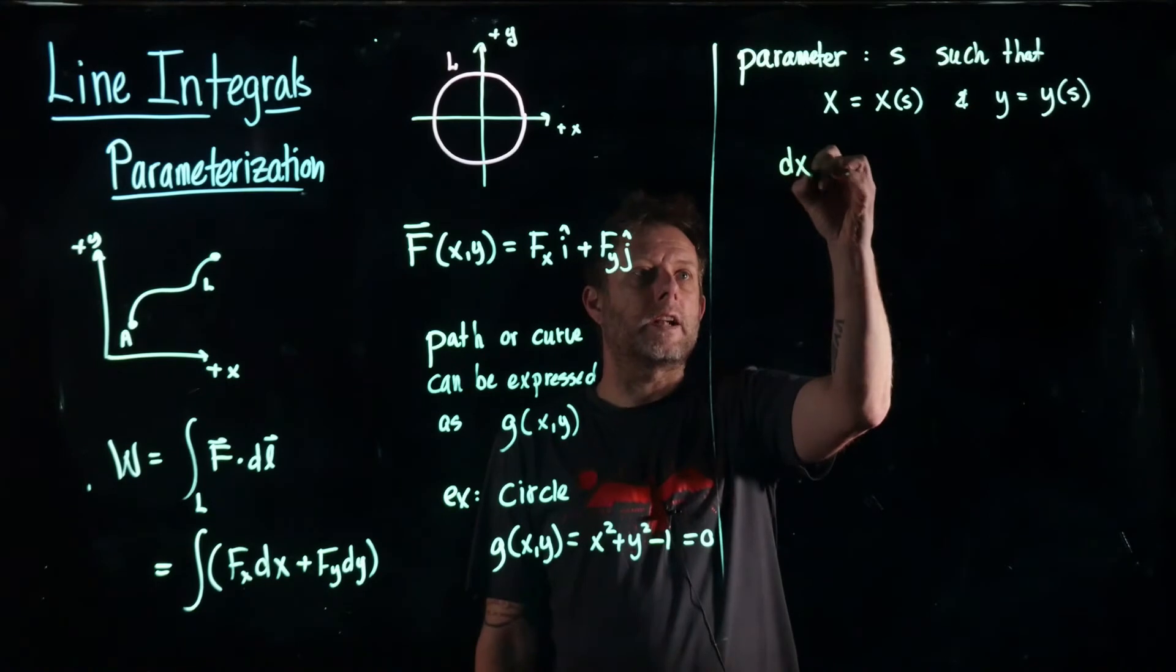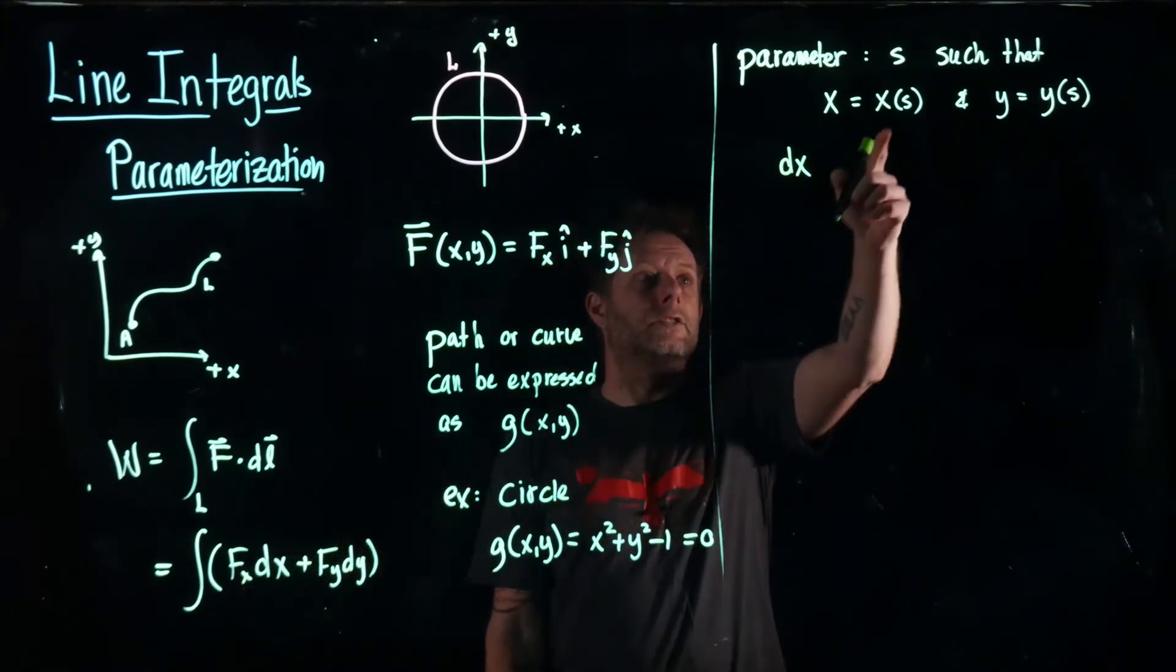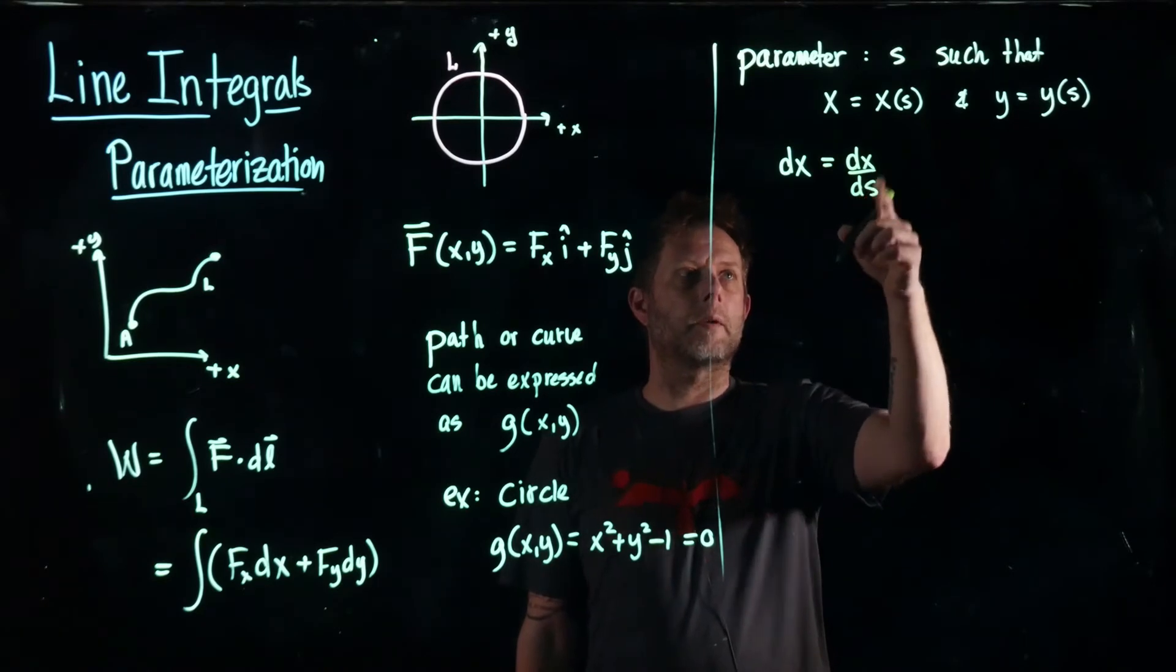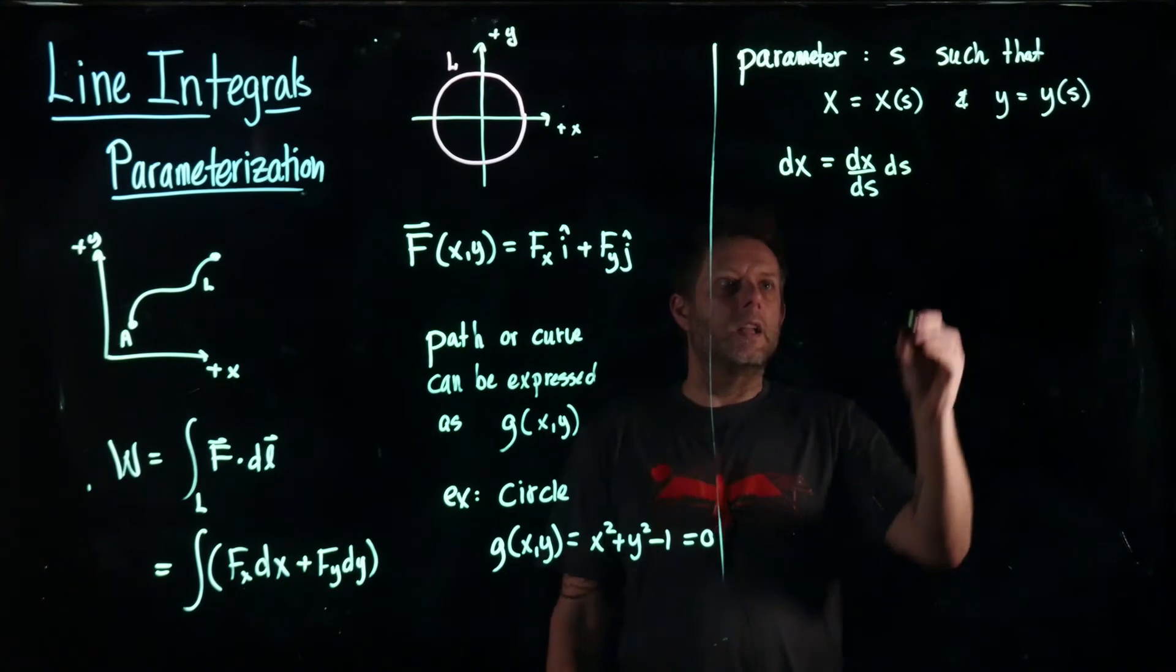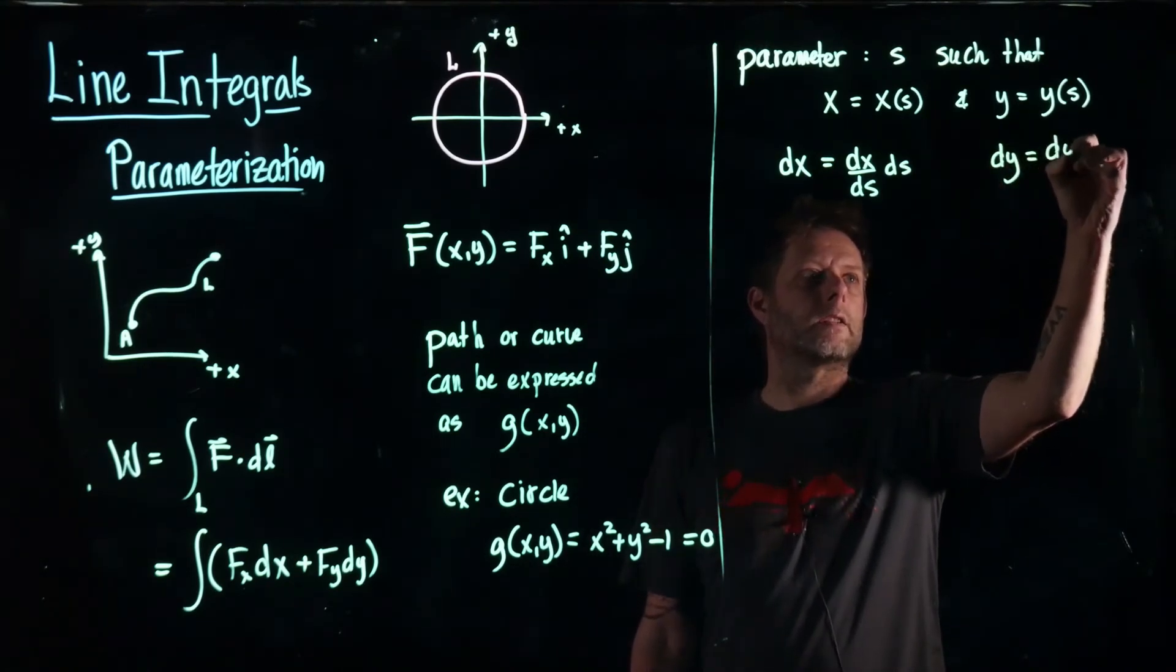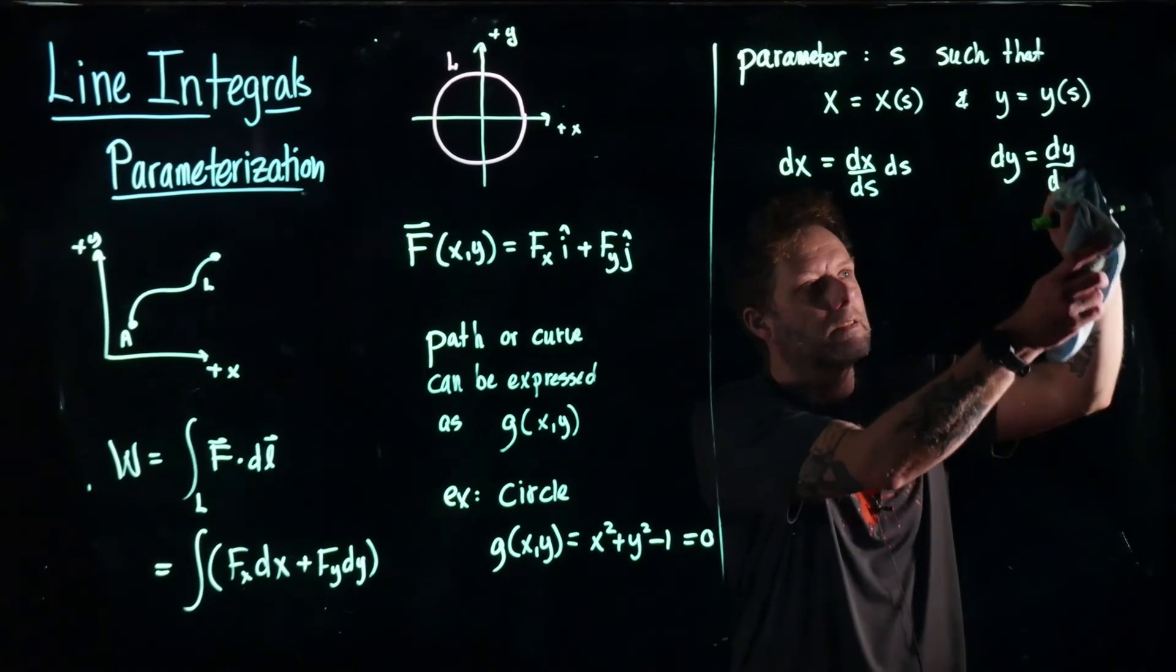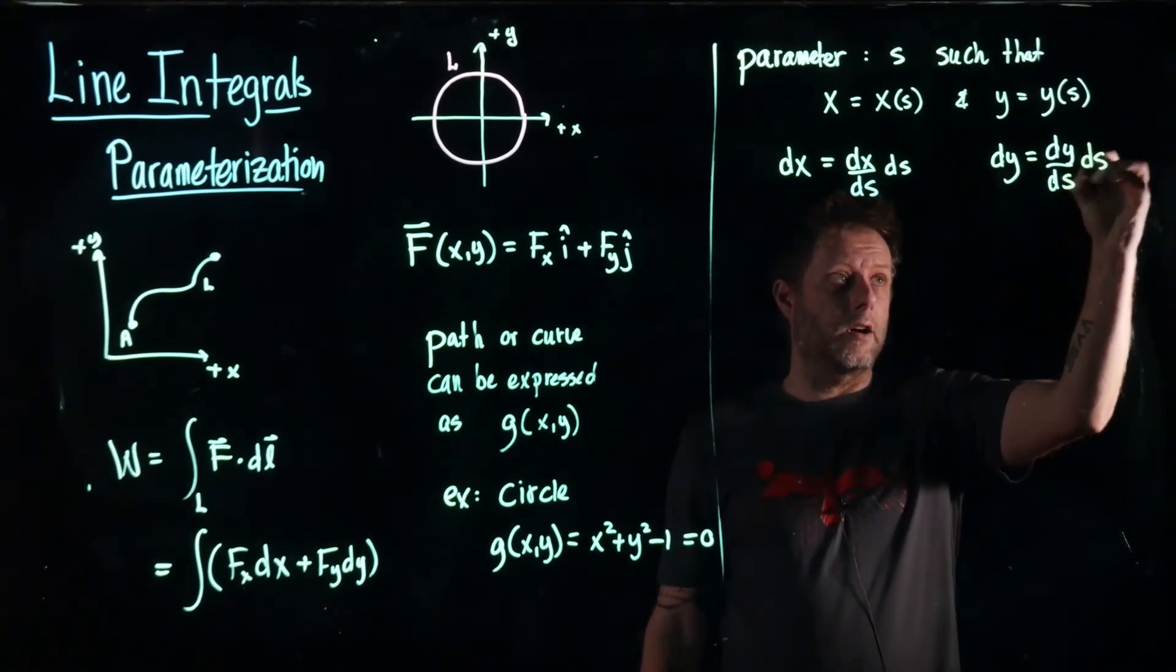So the differential of x which we have right here in terms of the differential of s is equal to the derivative of x with respect to the parameterization variable s multiplied by the differential of s. We could do the same thing for y. So it's the derivative of y with respect to, sorry not x, s times the differential of s.